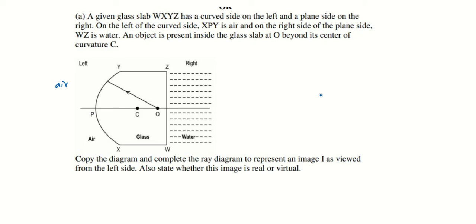In this question, there's a glass slab XYZW. It has one curved surface on this side and another plain surface on the other side. On the right side is water, on the left side is air. There's an object inside the glass medium represented as O.